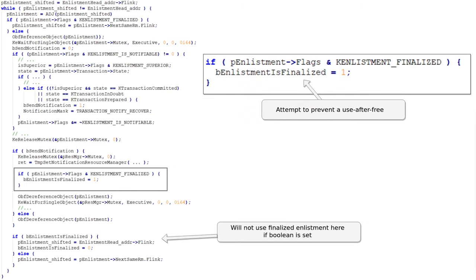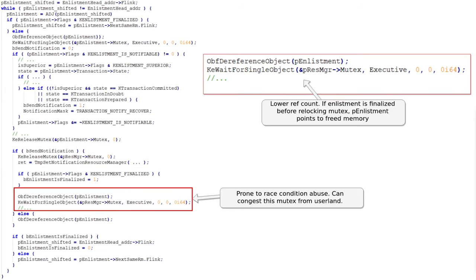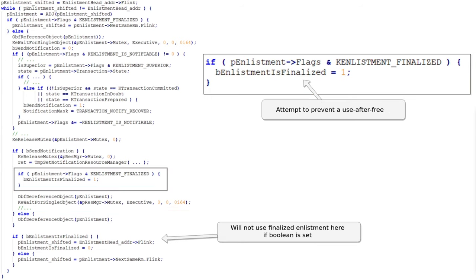After TMP set notification resource manager returns, it queries the enlistment to see if a flag saying it was finalized is set. Our guess is that when an enlistment is prepared to be freed, its state is changed to finalized. If the finalized flag is set, it sets a new boolean — which we call B enlistment is finalized — to 1. Then it dereferences the enlistment object, decreasing the reference count, and waits again on the resource manager mutex to get exclusive access. This is actually the vulnerability.